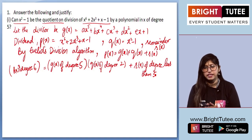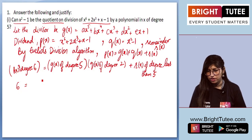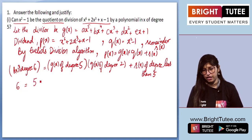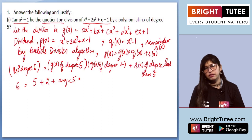If I'll just check it out, P(x) is of degree 6, G(x) is of degree 5 plus Q(x) is of degree 2, and let's say R(x) could be of any degree less than 5.